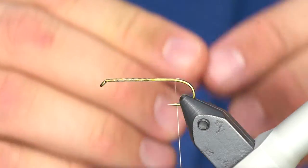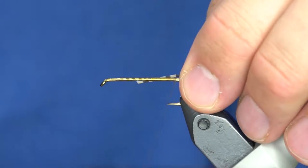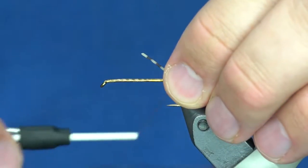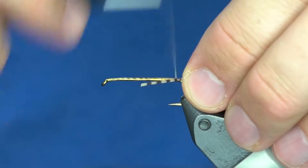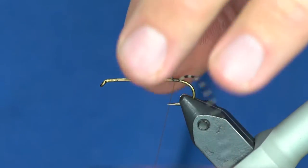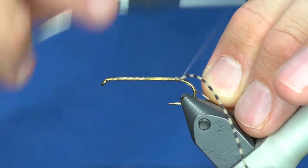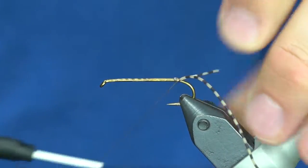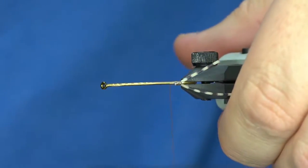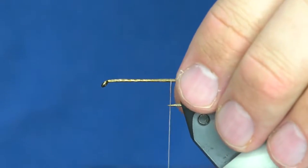I'm going to tie on a little fork tail. I'm going to tie in this rubber leg on the far side of the hook shank, just like that. Now I'm going to take this little tag end and pull it over onto the other side, just like that. Now I'll just trim those.